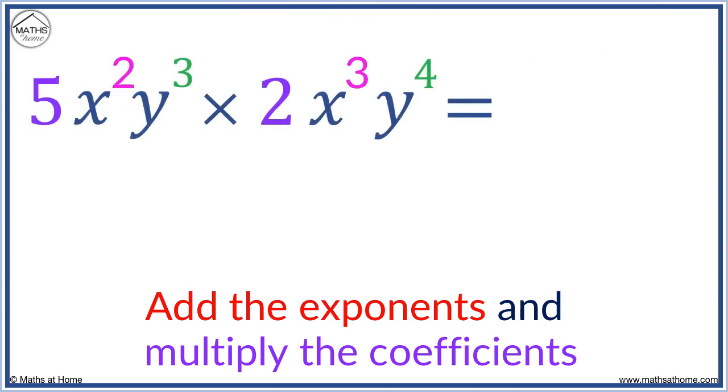Here we multiply the coefficients and add the exponents, doing so letter by letter. So, 5 times 2 equals 10. Now looking at the x terms, 2 plus 3 equals 5. And looking at the y terms, 3 plus 4 equals 7.